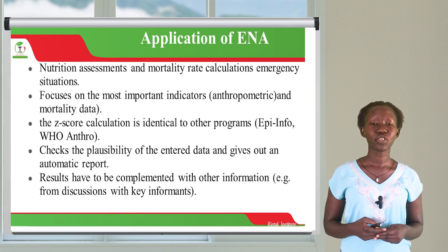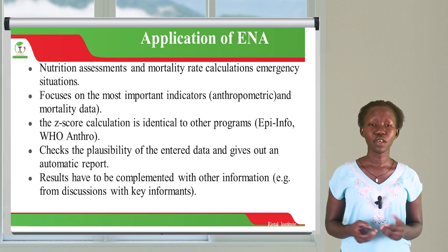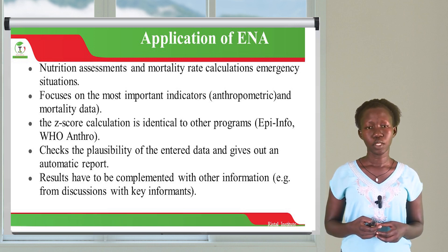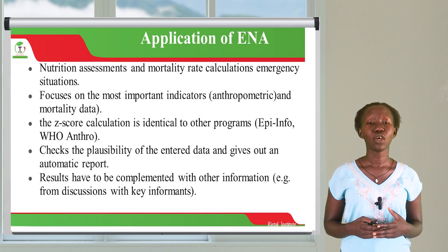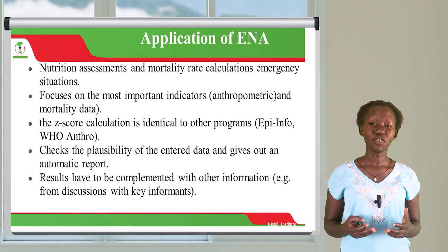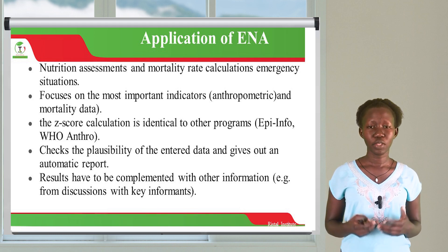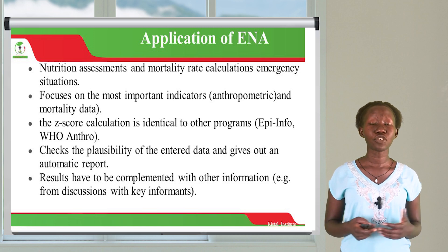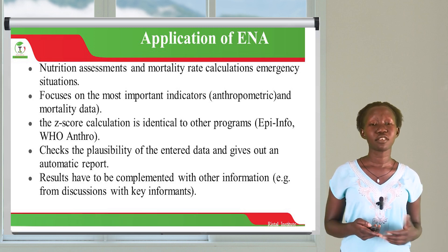The Z-score calculations are identical to other programs. This software also checks the plausibility of the entered data and gives out an automatic report. The results have to be complemented with other information, for example, discussions with key informants and volunteers in the field.